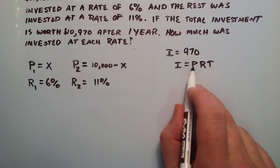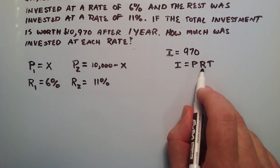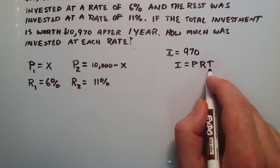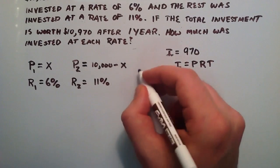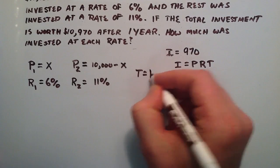Interest is equal to the amount that we start with multiplied by the rate of investment multiplied by the time that it was invested. So let's go ahead and just set up our variables this way. And we know that T is equal to one year for both.